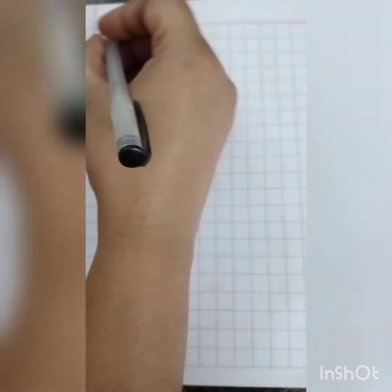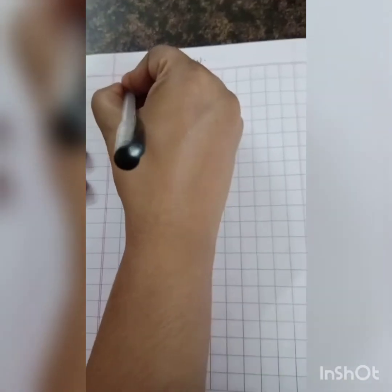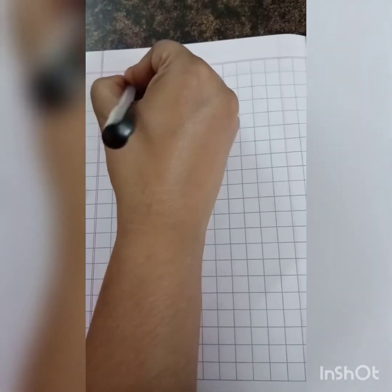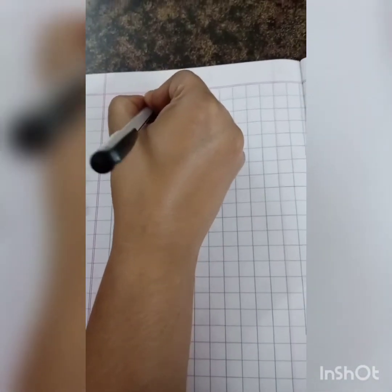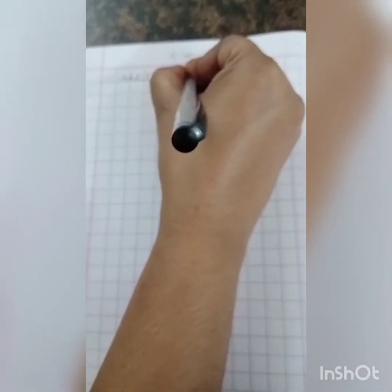So all of you be ready with your math copies, square line copy. Come. So first write classwork here children and write date also. So what we are going to do? We are going to do addition on abacus.